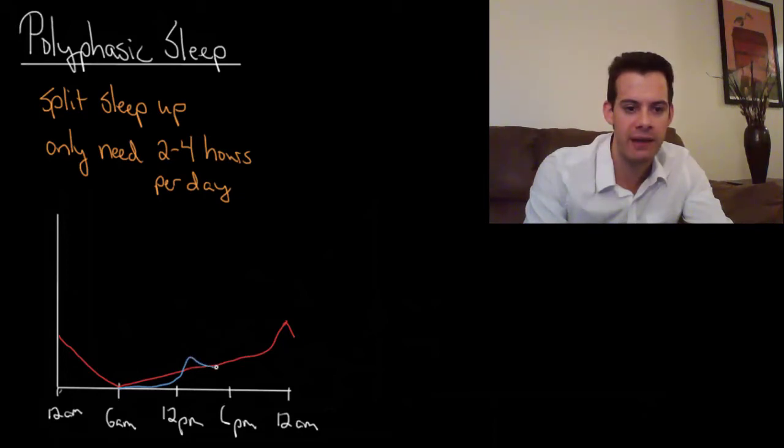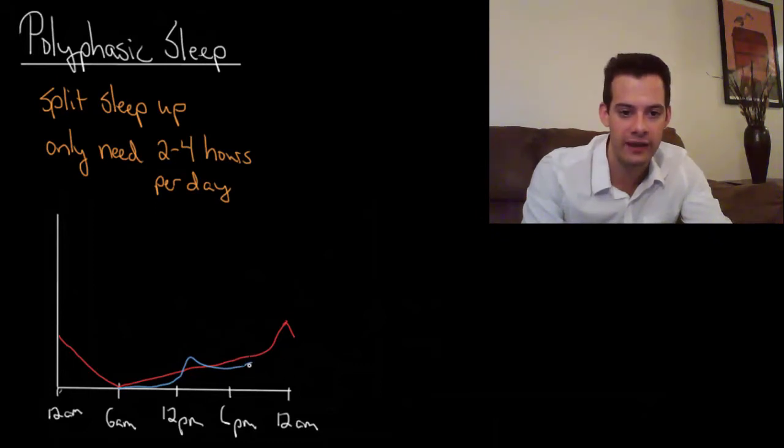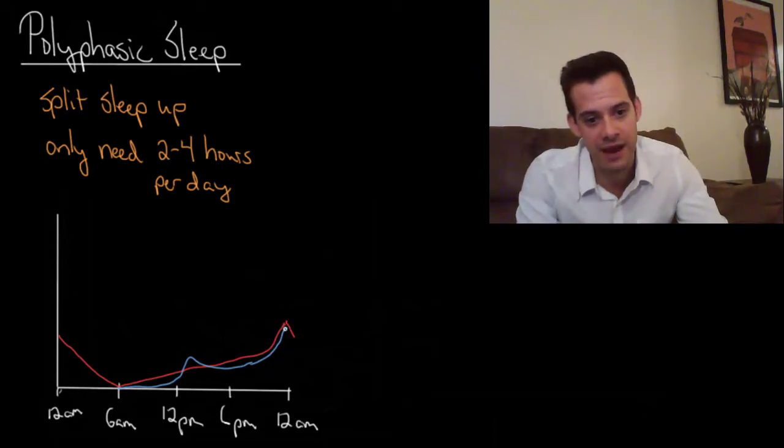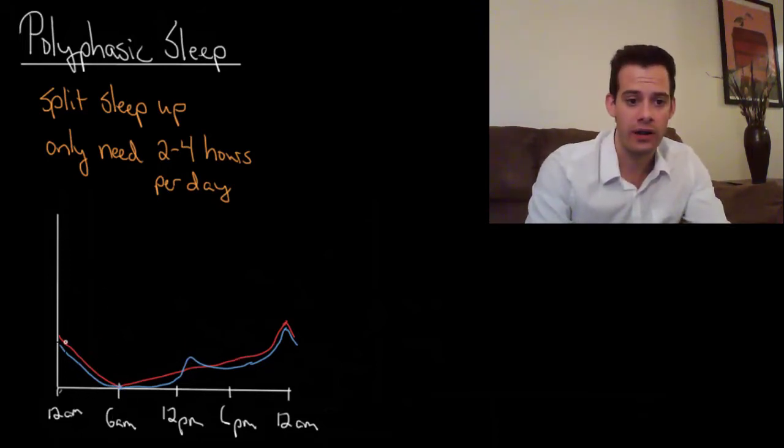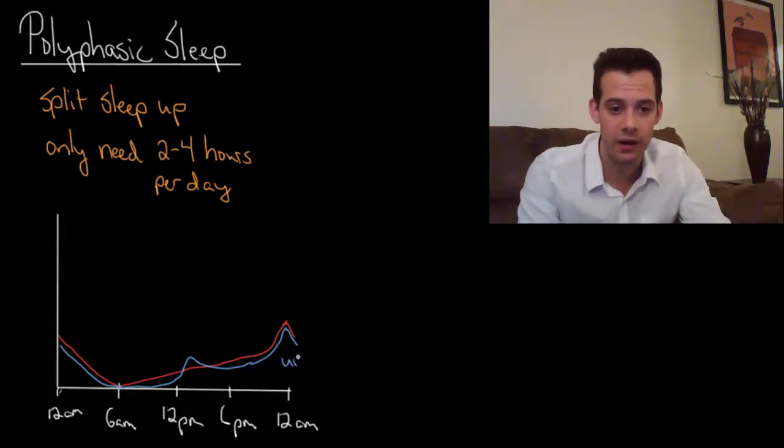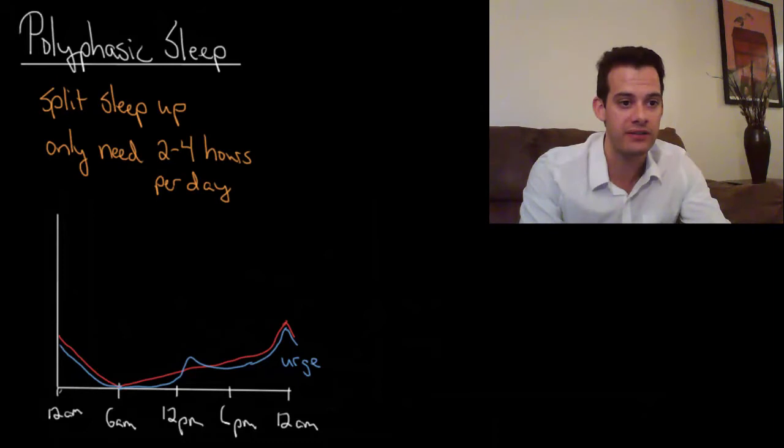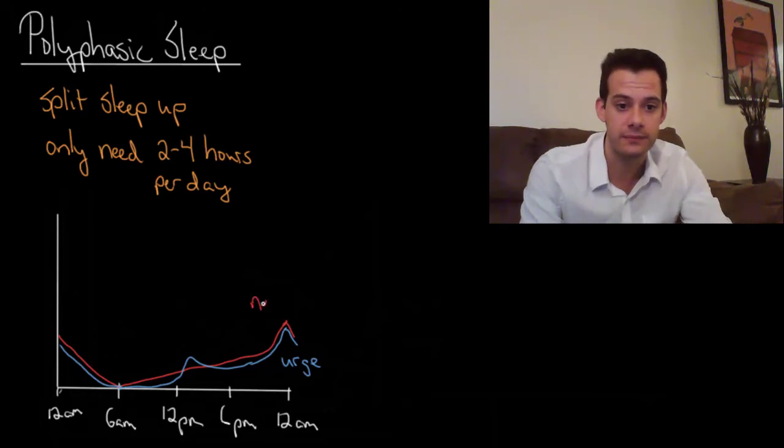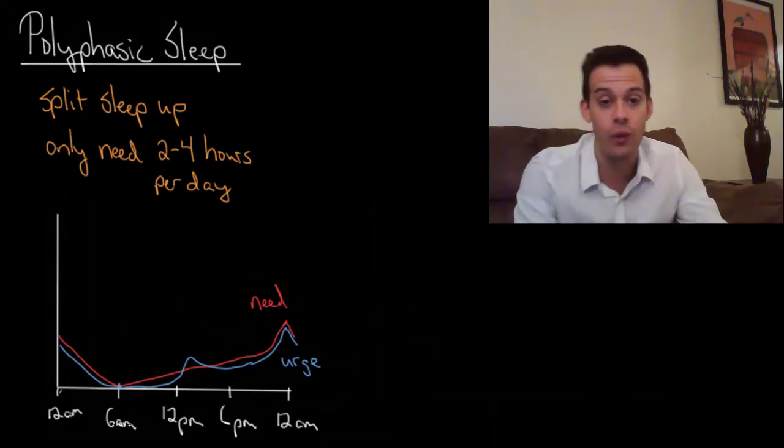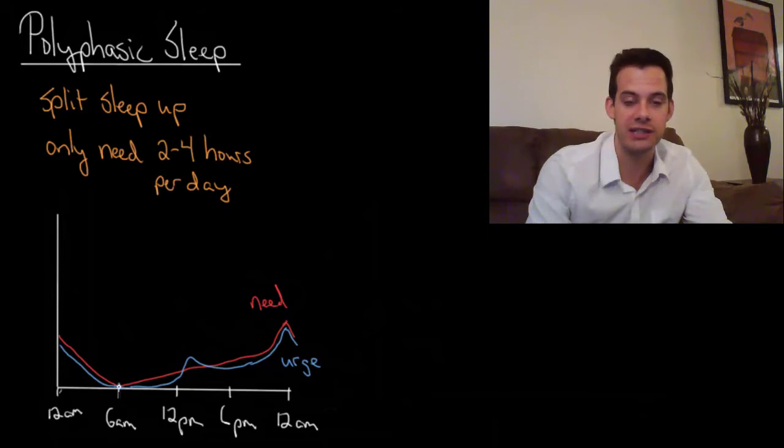But they're generally able to feel awake and alert for most of the day. And then as we get later into the night, again, this urge to sleep starts increasing. And hopefully around the same time that need for sleep is highest, the person sleeps. And so their urge to sleep is going to get reset back down to zero. And so this is sort of the ideal way to have your sleep organized where your need for sleep and your urge for sleep are lined up in the right places. They're both at their lowest when you're waking up in the morning. And they're both at their highest when you're trying to go to sleep at night.